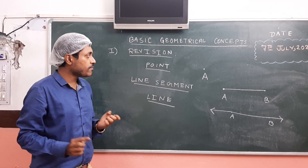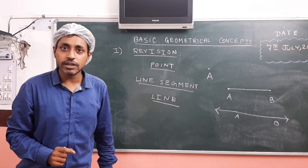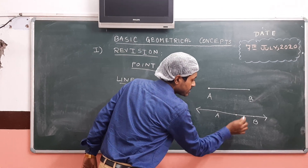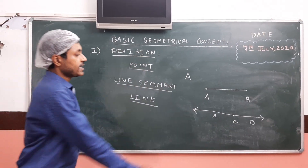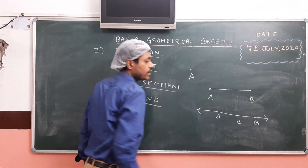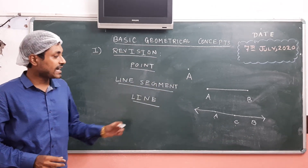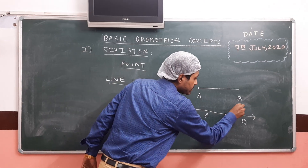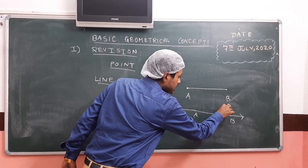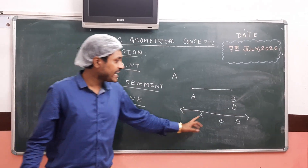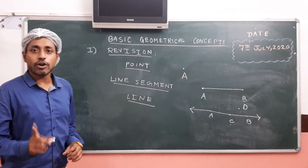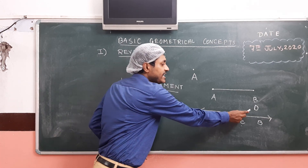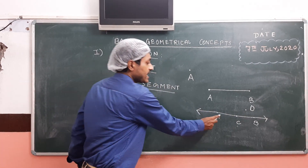Also, if you remember, we did collinear points and non-collinear points. If we consider a line and a point C on this line, then A, C, and D are called collinear points because they lie on the same line. Similarly, if we consider another point D outside the line, then A, D, and B will not be collinear — hence non-collinear points — because D does not lie on the same line as A and B.